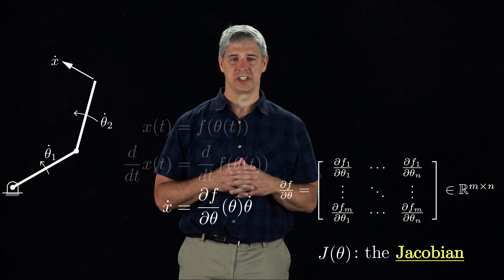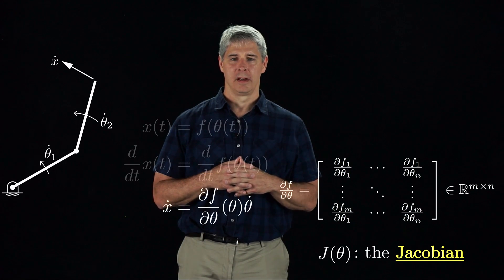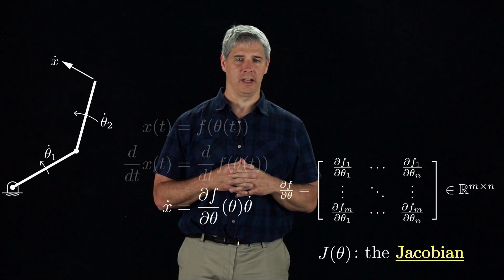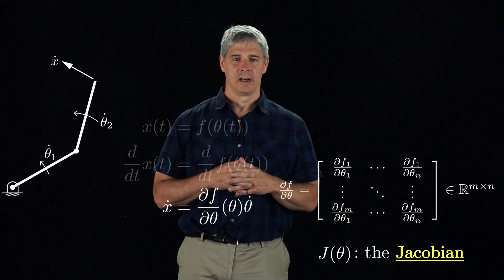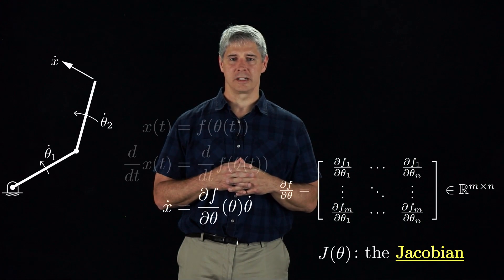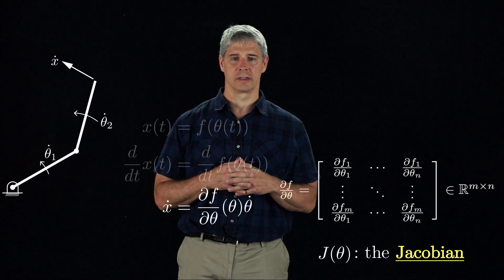This matrix is called the Jacobian, J, of the robot arm. The Jacobian is important not only for relating joint velocities to end effector velocities, but also for relating end effector wrenches to joint forces and torques, as we will see soon.